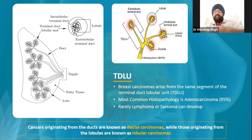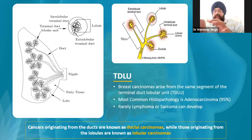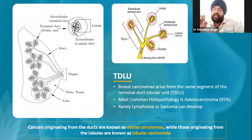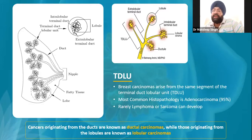Coming back to the terminal ductal lobular unit: when a cancer or neoplasm develops within the ductal tissue, it is called ductal carcinoma. When the origin of cancer occurs from the lobules, it is called lobular carcinoma.